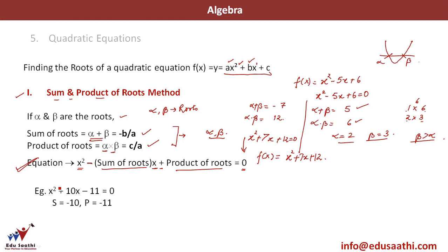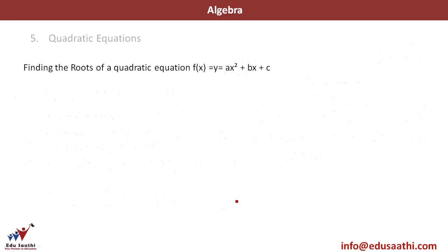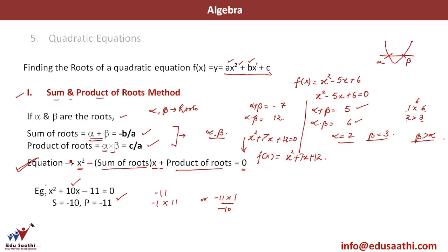Another example: x² + 10x - 11 = 0. Sum of roots = -b/a = -10, product of roots = c/a = -11. Now -11 can be formed by (-1)×11 or (-11)×1. The sum that satisfies this is -11 + 1 = -10. So the value of alpha and beta is -11 and 1. One root is -11 and the other root is 1.